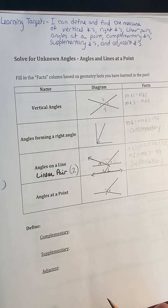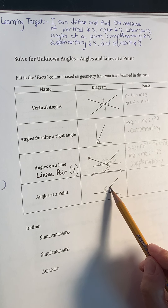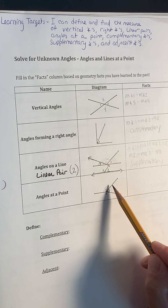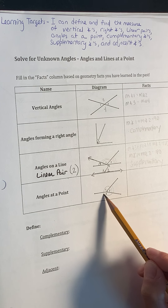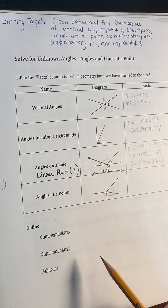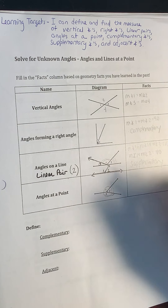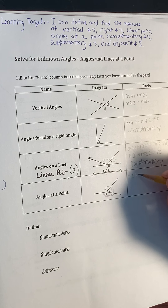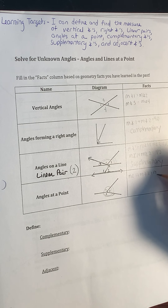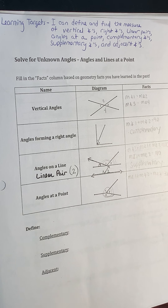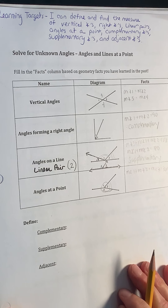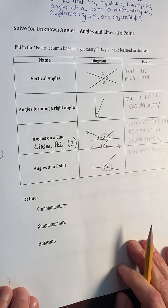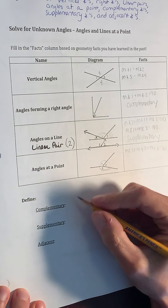Angles at a point — we have a point in the center, and if you add up all their measures — angle one, angle two, and angle three — they sum to 360. So the measure of angle one plus the measure of angle two plus the measure of angle three equals 360 degrees.